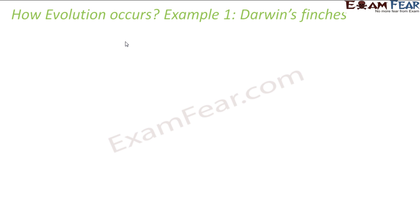The first example I'll take is of Darwin's finches. They are small birds named after Charles Darwin. Charles Darwin did a lot of study with respect to evolution, and his theory of evolution is the most accepted one amongst all other previous theories.